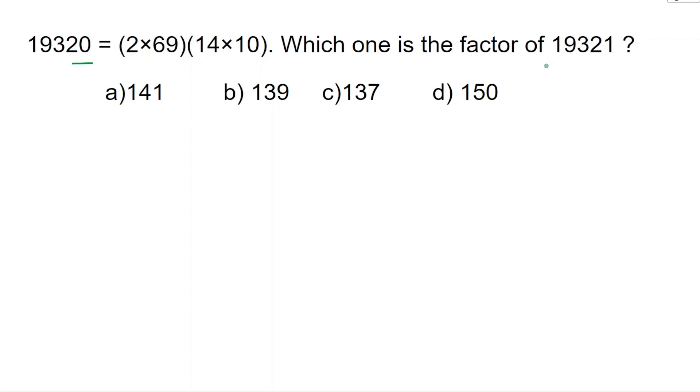So let's write the given equation: 19,320 equals 2 times 69 times 14 times 10. That's 138 times 140.